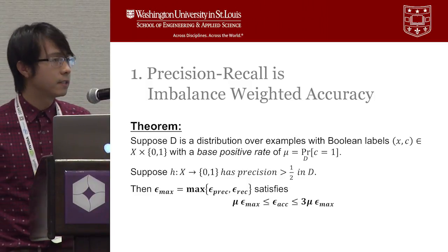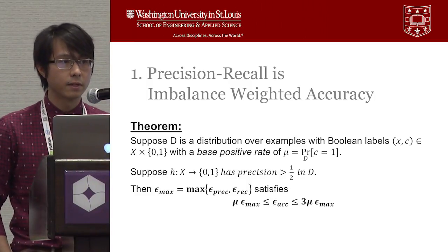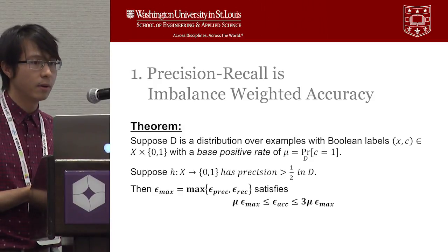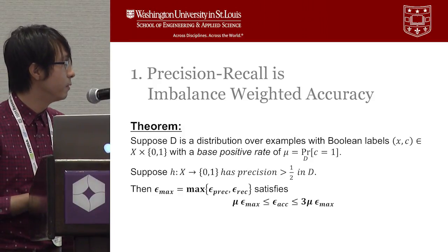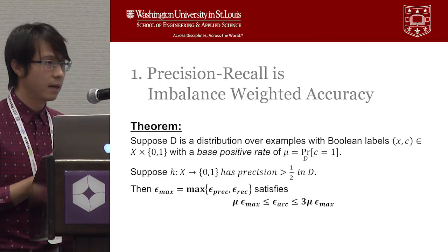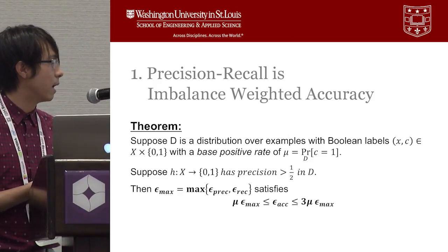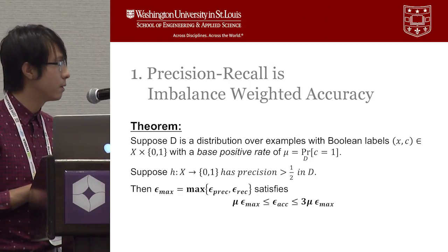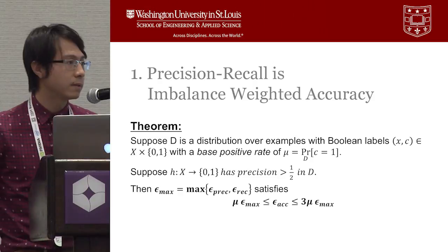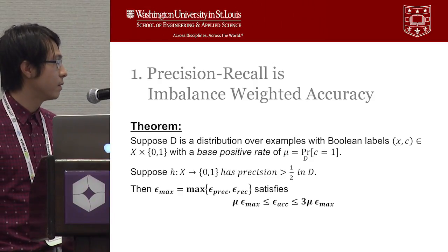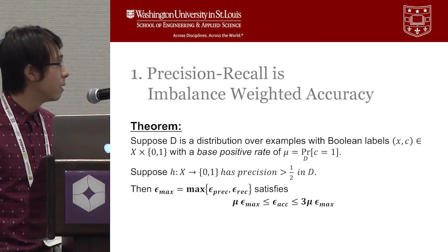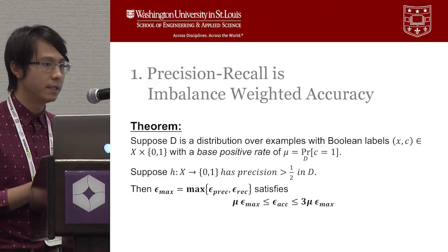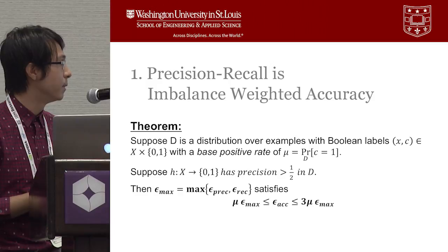Let's look at our derivation for the relationship between precision, recall, and accuracy. Our theorem supposes this is a distribution of examples with boolean labels and a base positive rate mu, and we have a classifier h with precision greater than 0.5. We define epsilon_max as the maximum of precision and recall error. Then epsilon_max must satisfy: mu * epsilon_max ≤ epsilon_accuracy ≤ 3 * mu * epsilon_max. In general, precision and recall is an imbalance-weighted accuracy scaled by the factor 3 * mu, the positive rate.